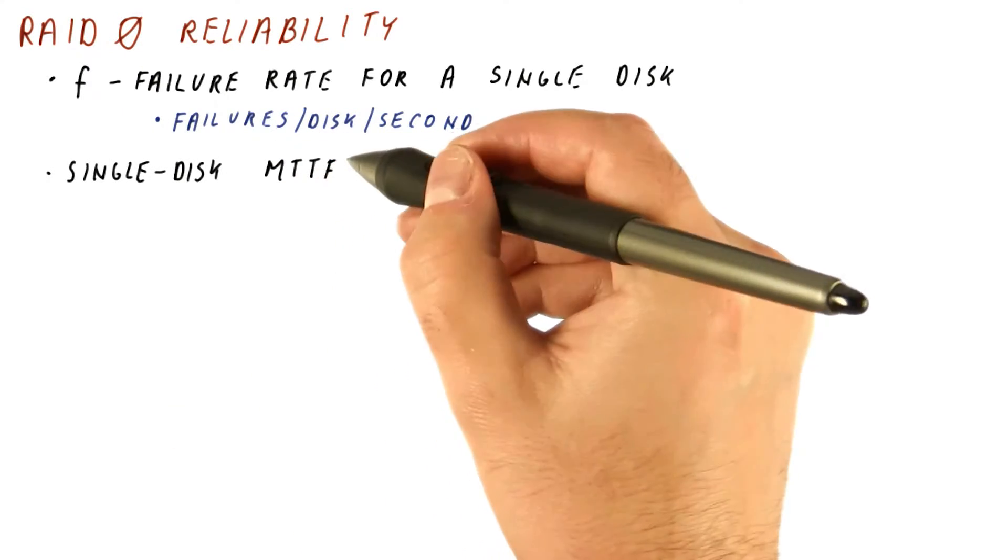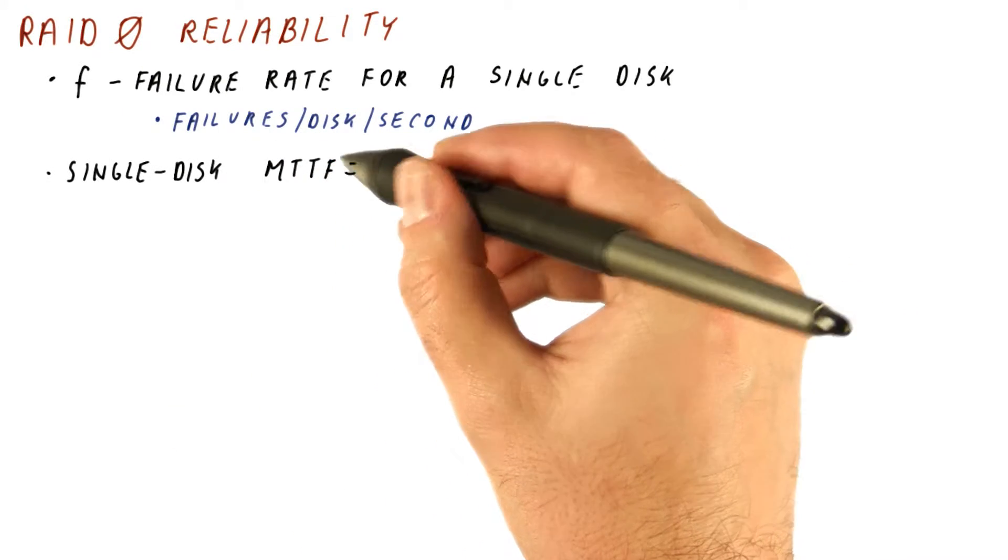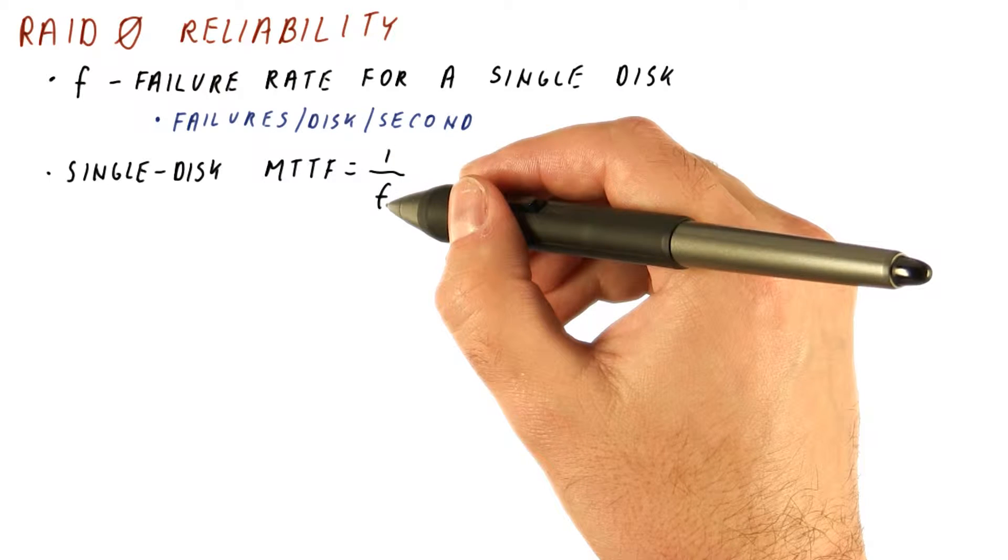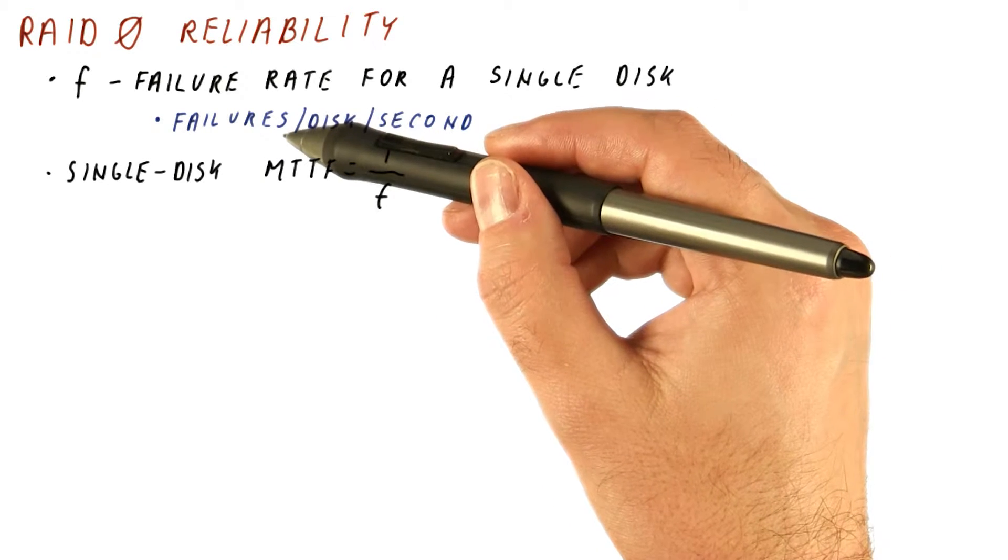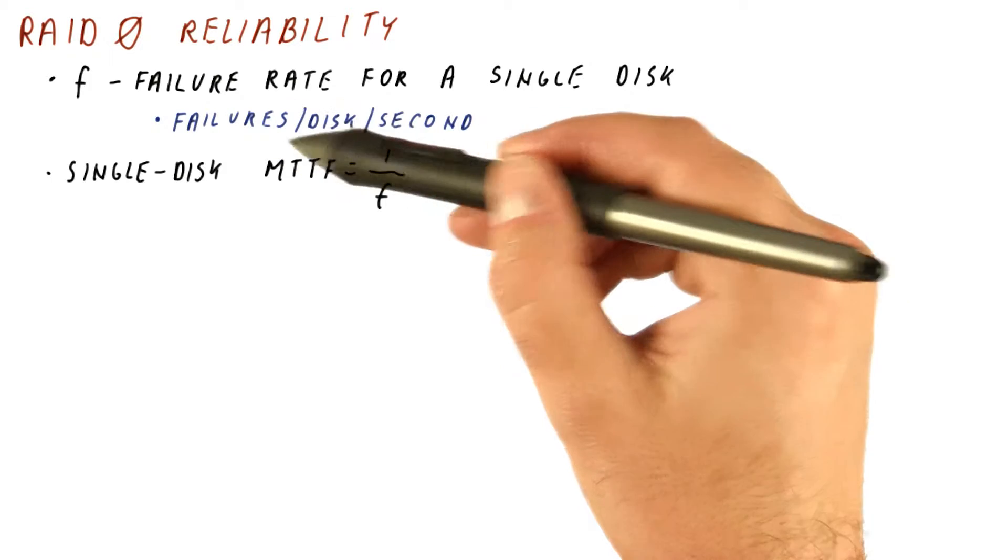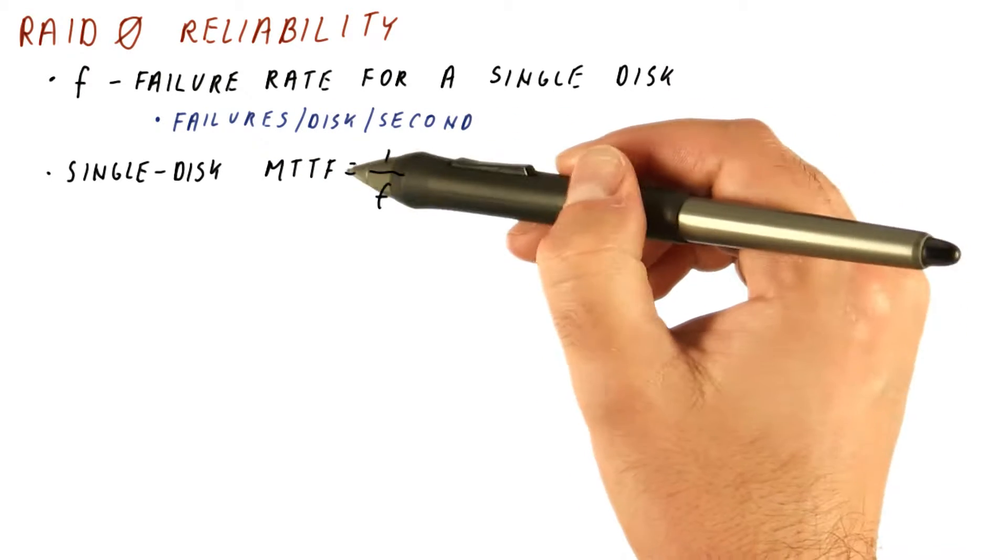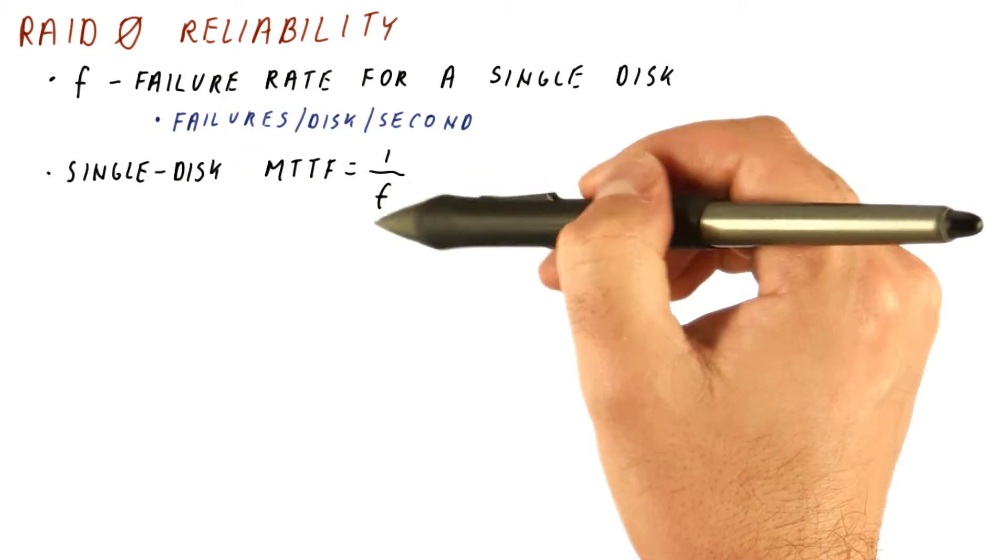For a single disk then, the MTTF, the mean time to failure, will be 1 over f. So for example, if the disk has 1 millionth of a failure per second, then the MTTF will be 1 million seconds.